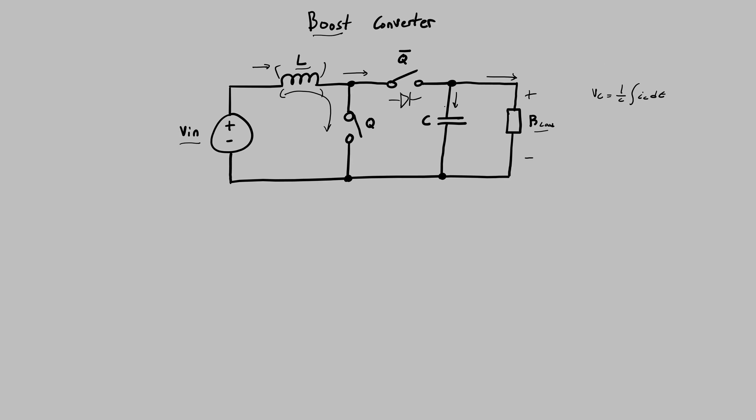You can see this voltage increase effect through the integral form of the voltage across the capacitor. The voltage across the capacitor is simply one over the capacitance multiplied by the integrated current. So the more current you push into the capacitor over time, you're going to end up with a larger voltage across the capacitance. You end up with the voltage increase effect due to the nature of the inductor wanting to keep a constant current flowing through the circuit.